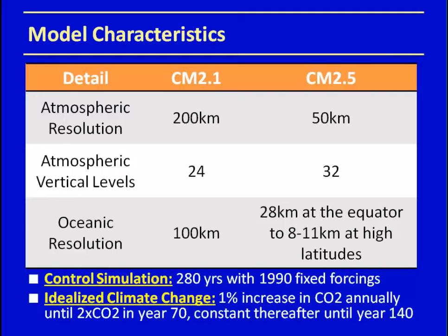We use two models: CM2.1 and CM2.5. CM2.1 has 200-kilometer resolution, 24 atmospheric vertical levels, and an ocean resolution of 100 kilometers. CM2.5 has 50-kilometer resolution, 32 vertical levels, and a mixed ocean resolution of 28 kilometers at the equator to 8–11 kilometers at high latitudes. We have two simulation sets: a control simulation of 280 years with 1990 fixed greenhouse gas forcing, and an idealized climate change simulation where atmospheric CO2 increases by 1% annually until CO2 doubles in year 70, then remains constant. These let us understand present and future climate of snow.